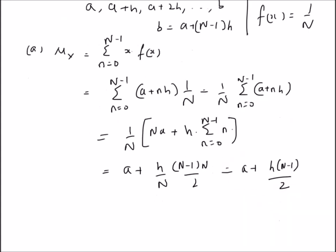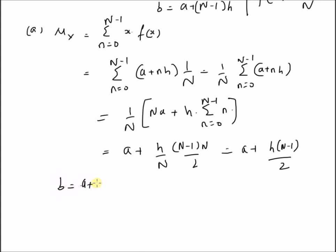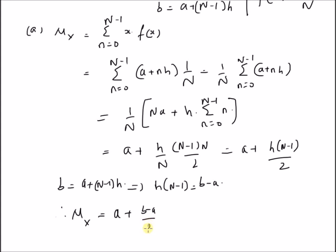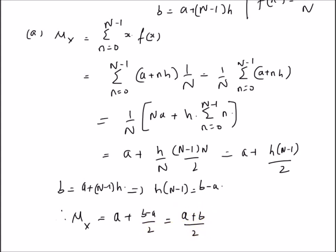The value of b is defined as a plus n minus 1 into h, which implies h into n minus 1 is equal to b minus a. Therefore, the mean value of x is a plus b minus a by 2, which is nothing but a plus b by 2. Hence, the mean of a discrete uniform random variable is equal to the average of the values at its endpoints — assuming a and b are the endpoints, the average of these endpoints is the mean.